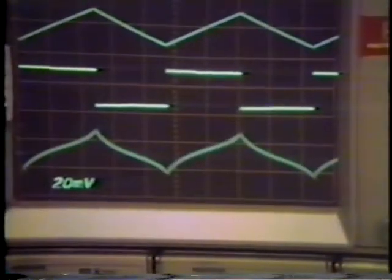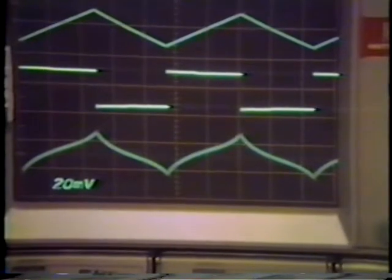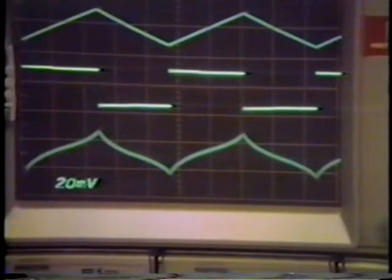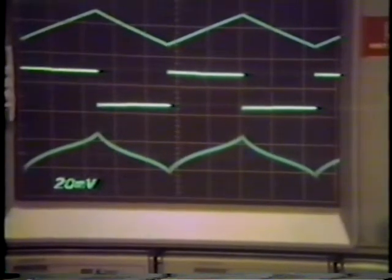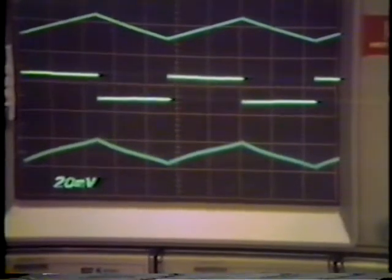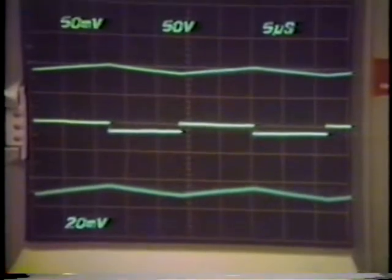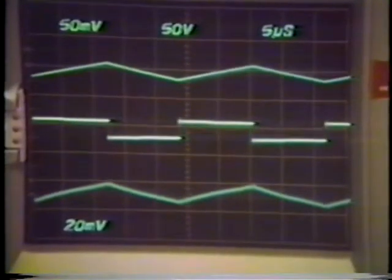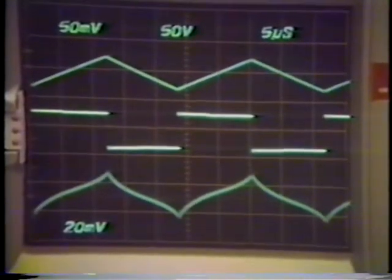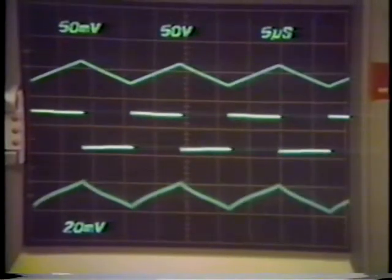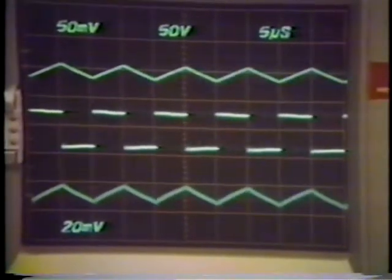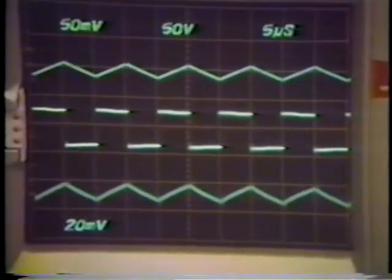By reducing the voltage drive, we can essentially reduce the flux excitation in the core and avoid saturation, just like by increasing switching frequency, we can decrease the flux swing and get out of the nonlinear region.